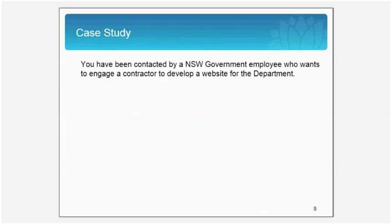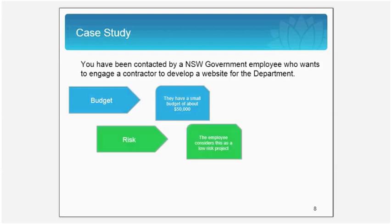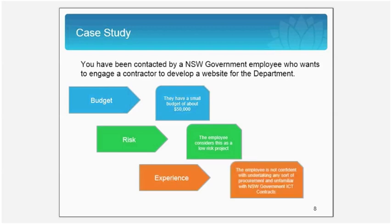Let's now look at a case study to understand when and how we use the short form contract. In this case study, we will review a department's request for assistance in determining the best course of action when purchasing under the Procure IT framework. In the given scenario, a government employee wants to engage a contractor to develop a website for his department. He has a budget of $50,000, deems the project low risk, but has no experience undertaking procurement activity and is not familiar with NSW Government ICT contracts.